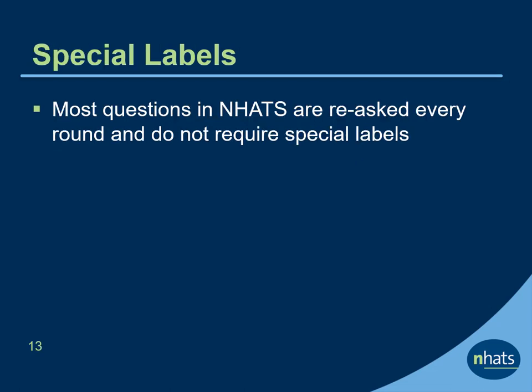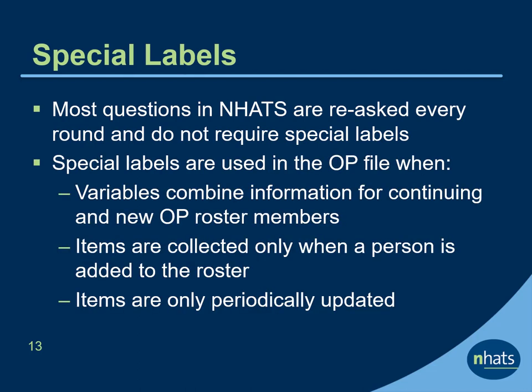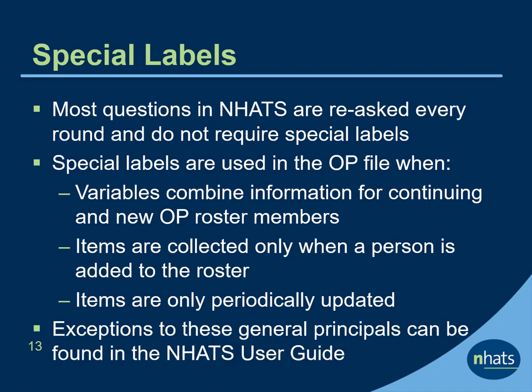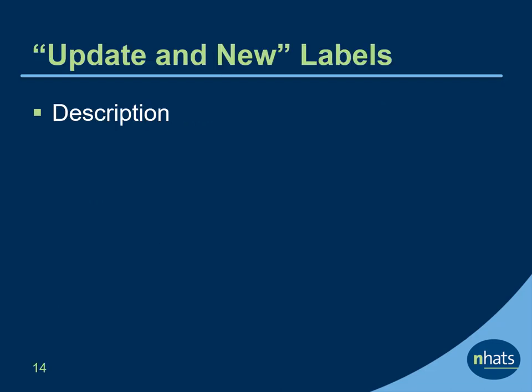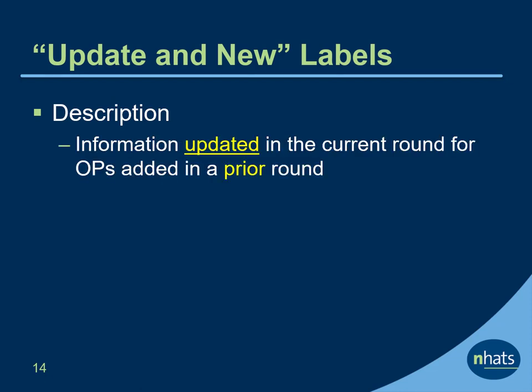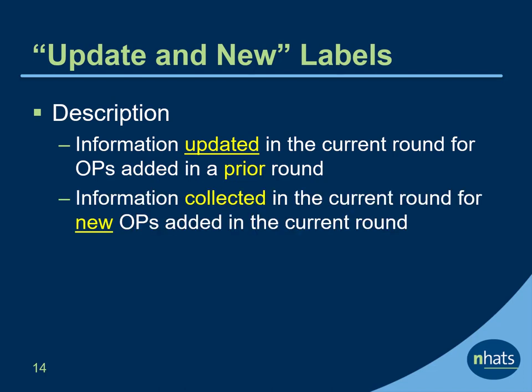Most questions in NHATS are re-asked every round and do not require special labels. However, starting in round 2, NHATS uses special labels in the OP file under a few circumstances: when variables combine information for continuing and new OP roster members, when items are collected only when a person is added to the roster, and when items are only periodically updated. 'Update and New' at the end of the variable label indicates sources were combined — information was updated in the current round for OPs added in a prior round, and collected in the current round for new OPs added in that round.